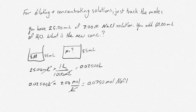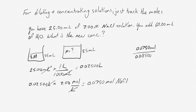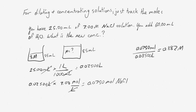When we add our solutions together, our new volume is 85 milliliters, which is 0.08500 liters. So we divide 0.0750 moles of sodium chloride by 0.08500 liters, and our new concentration is 0.882 molar sodium chloride.